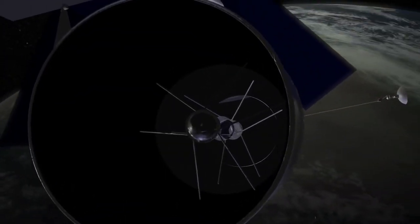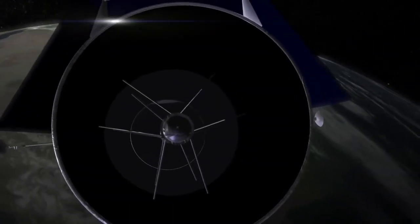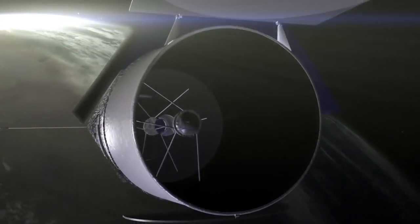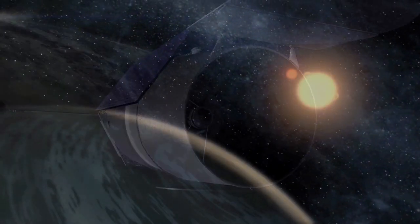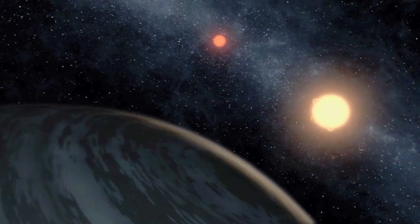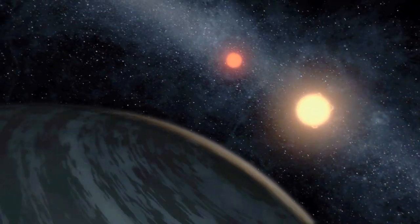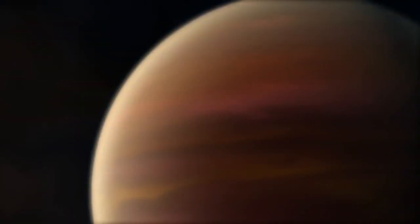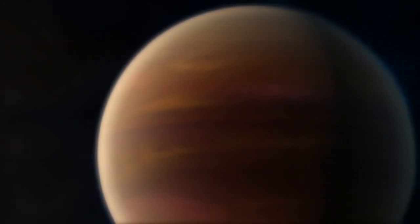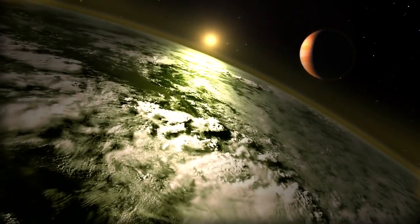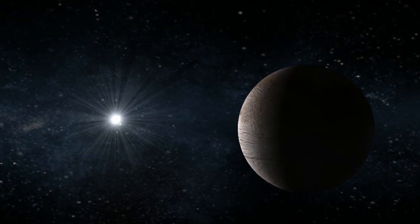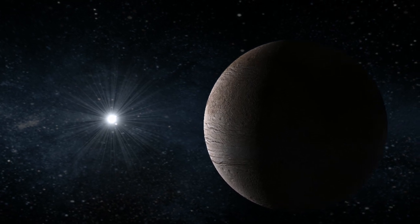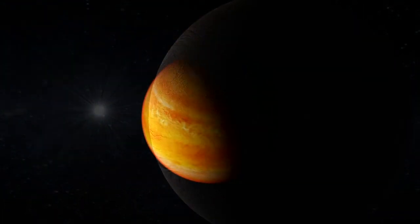This coronagraph being developed at JPL will fly in space roughly in the middle of the next decade in the WFIRST mission. WFIRST is primarily a mission to study dark energy, with another experiment on board to do microlensing of planets. The coronagraph will do direct imaging and spectroscopy of Jupiter-size and perhaps Neptune-size planets. These are the main technologies we're developing for this quest to look for life around other planets.